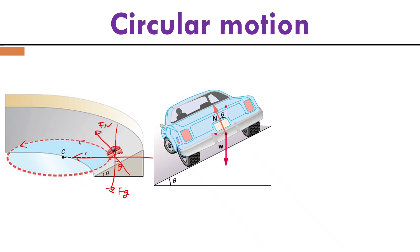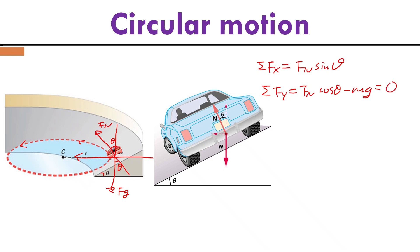Along the x-direction, the net external force equals Fn times sine theta. Along the y-direction, Fn times cosine theta minus mg equals zero, since the car is not moving vertically. The horizontal direction is exactly the net external force pointing to the center — that is my centripetal force — equal to mass times centripetal acceleration.